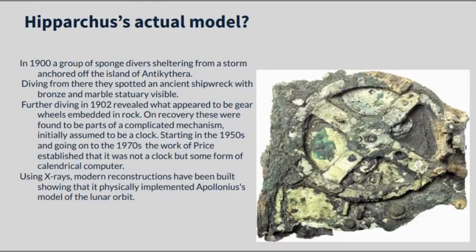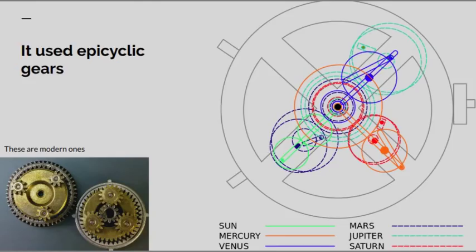It turns out that it uses epicyclic gears, and it uses offset gearing, which does a literal implementation of the deferent model of the lunar orbit. This is a reconstruction of what some of the wheels were.